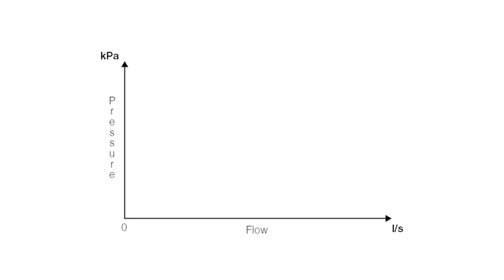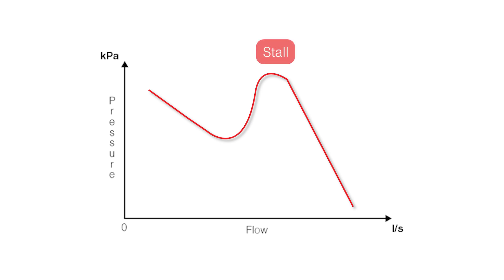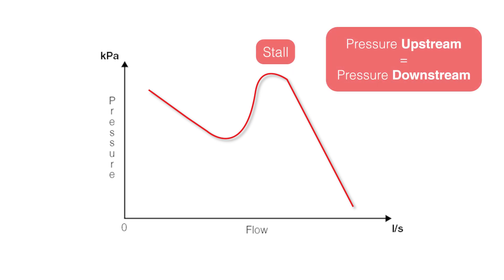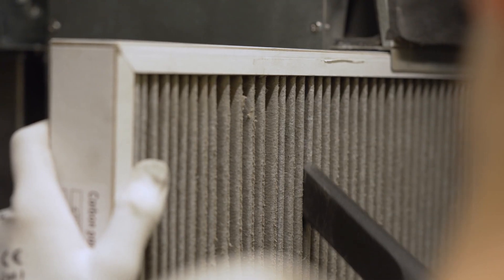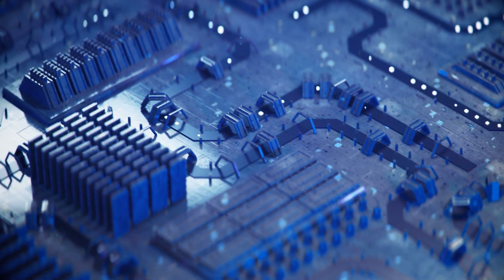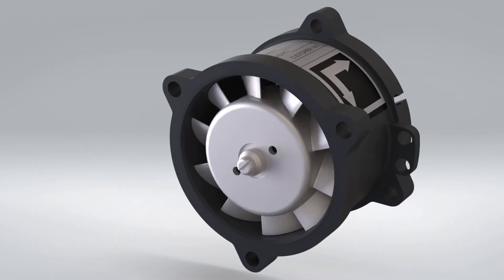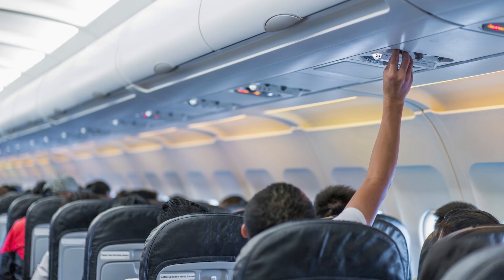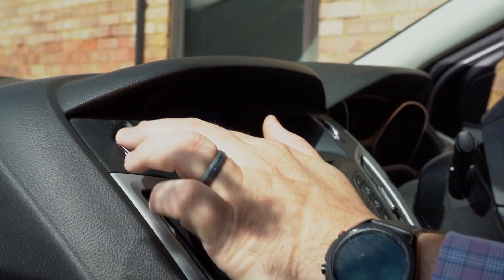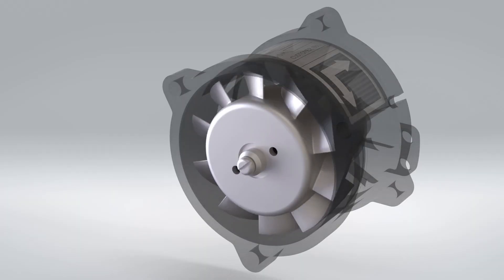However, like an aeroplane wing, a fan blade will stall and stop generating flow when it encounters certain conditions. For a fan blade, a stall condition occurs when the pressure upstream of the fan becomes equal to the pressure downstream. High pressure is generated upstream by anything resisting the airflow, including fixed grills, electronic equipment, or a variable resistance like a filter that's slowly blocking over time, or passengers opening and closing gaspers in an aeroplane or car ventilation system.